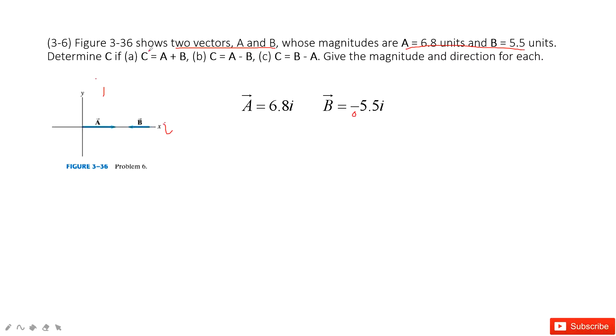Now the first thing we do is calculate C = A + B. For this one, we just add two vectors together. We can see we just look at the x-component and get the result 1.3i.